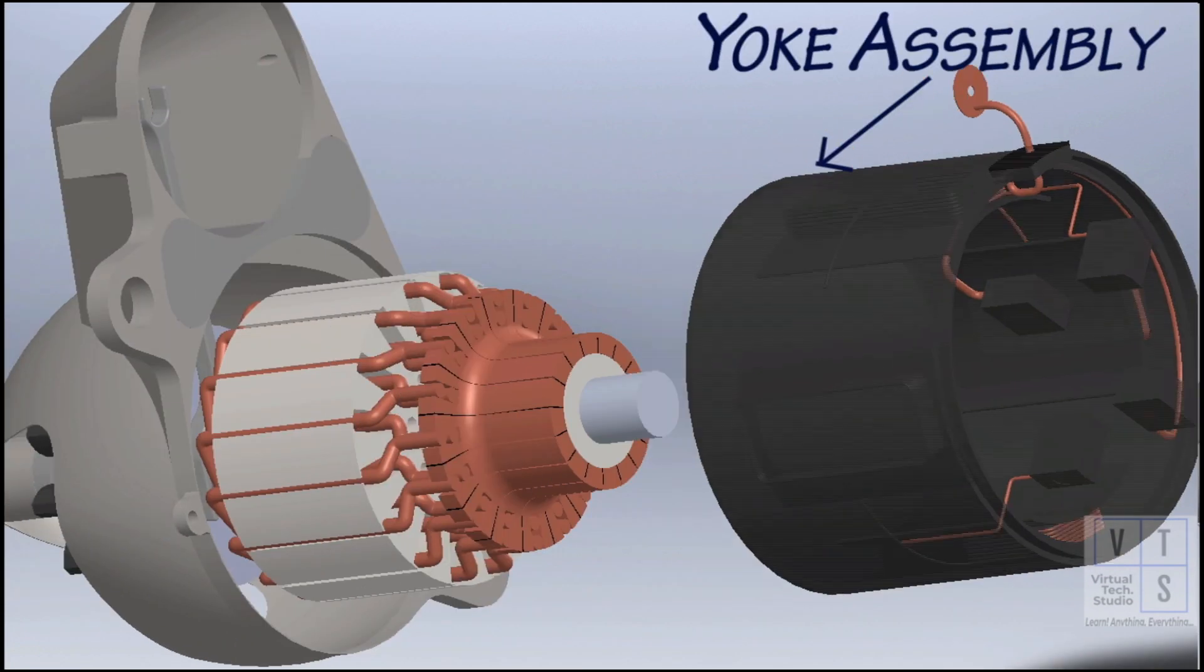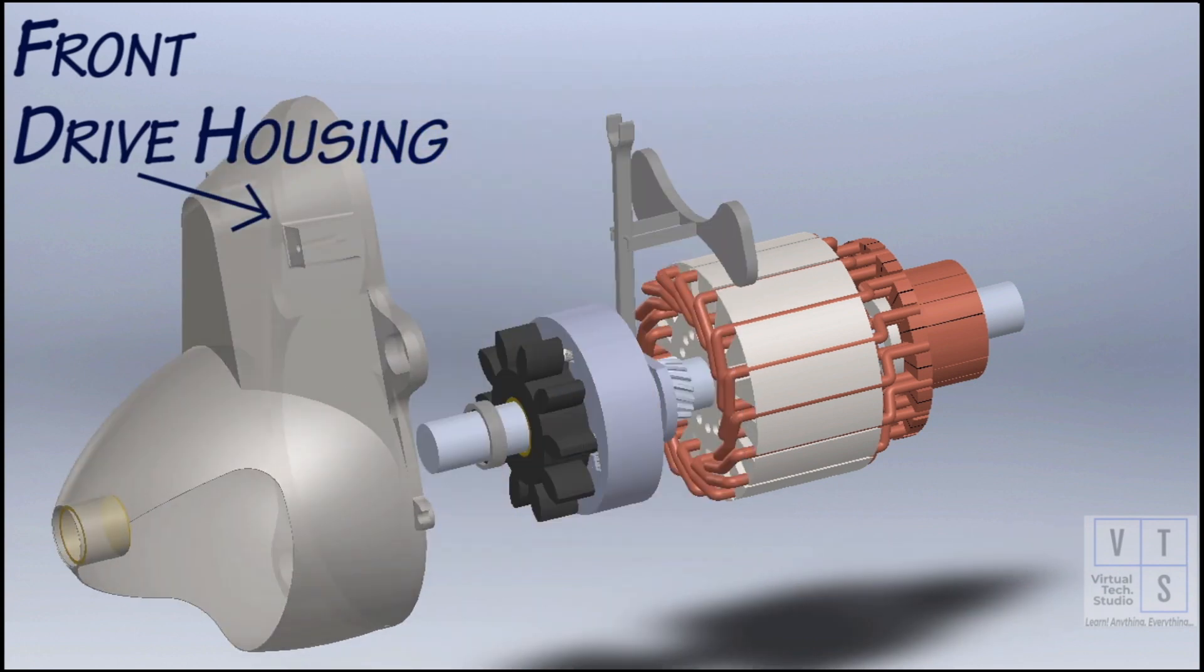Now yoke assembly having stator coils can be removed. Pull out the front drive housing and then the drive lever.